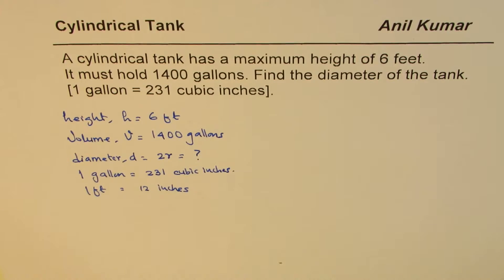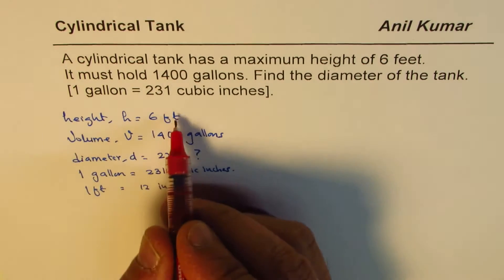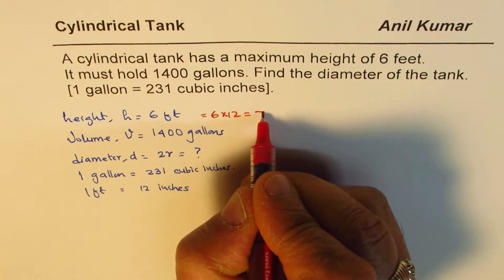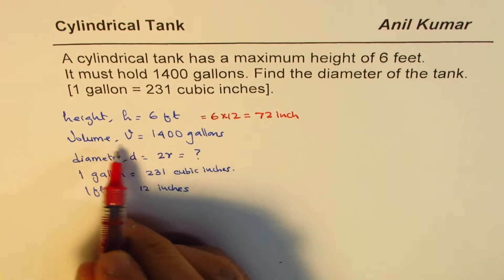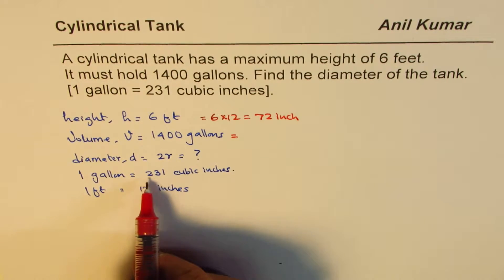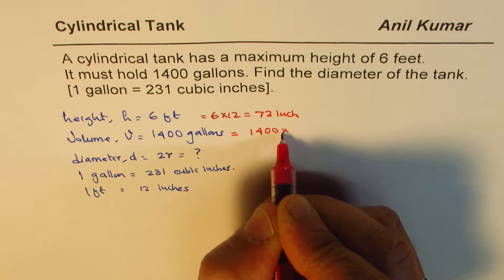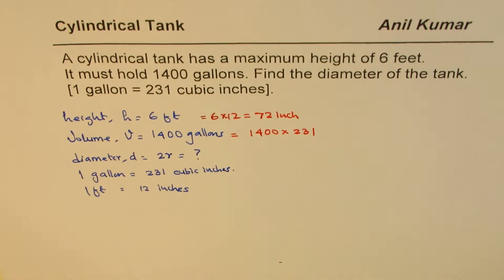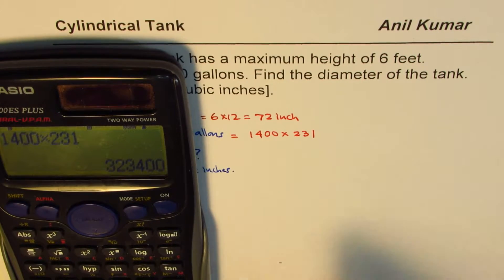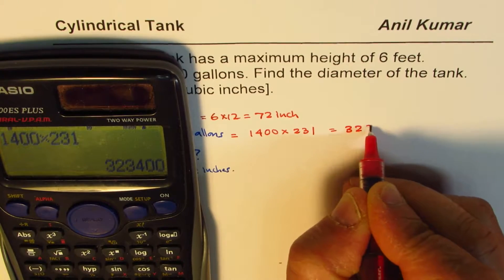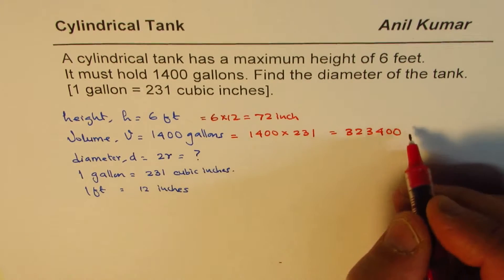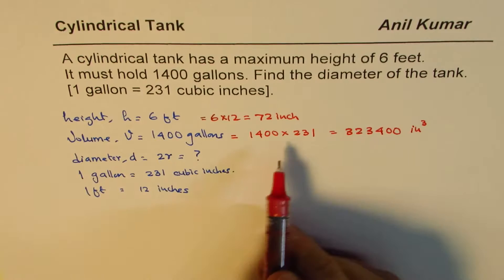Let's do the conversion now. A height of 6 feet converted to inches is 6 times 12, which is 72 inches. As for the volume, 1400 will be multiplied by 231: 1400 times 231 equals 323,400. So the volume is 323,400 cubic inches.